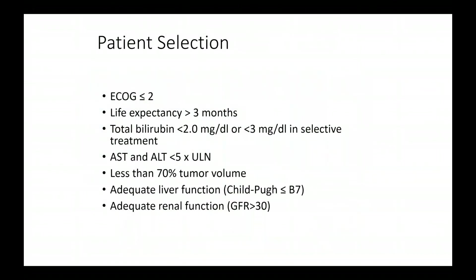Patient selection is similar for all these therapies. Ideally ECOG status of zero or one, up to two depending on circumstances. Patients should have a life expectancy of at least three months. Total bilirubin two milligrams per deciliter or less, up to three for very selective embolization. AST and ALT generally less than five times the upper limit of normal. Tumor volume less than 70%, realistically less than 50% in most practical aspects. Adequate liver function with a Child-Pugh score of B7 or less, and adequate renal function for contrast.